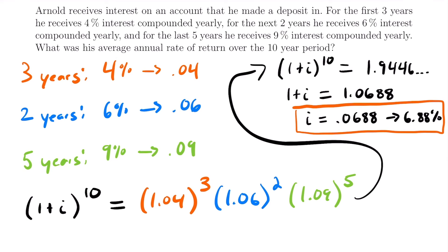This rate of 6.88% would give Arnold the same accumulation in his account over that 10-year period as the three different rates did for that same amount of time.